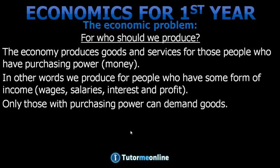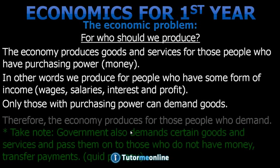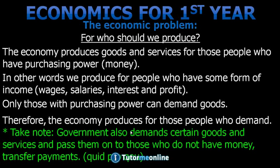Therefore, the economy produces for those people who demand. It's important to note that the government also demands certain goods and services and passes them on to those who do not have the purchasing power or money. We call this transfer payments, or quid pro quo payments — payments like social welfare.